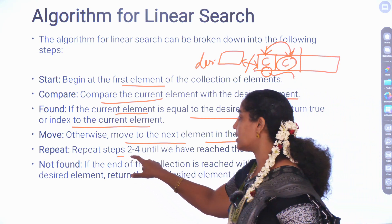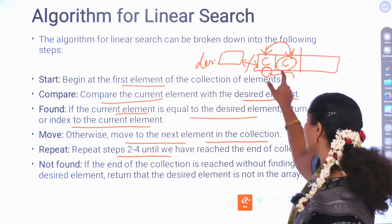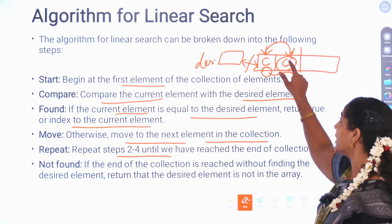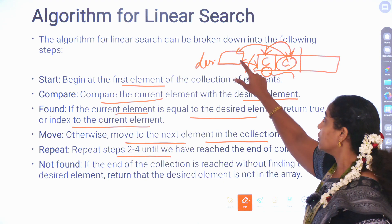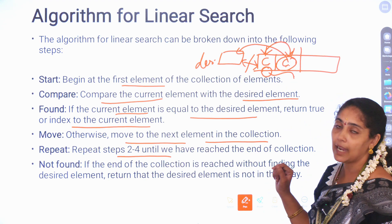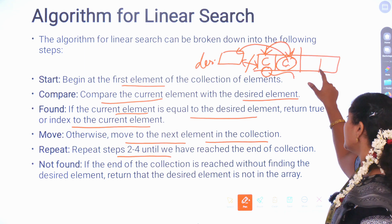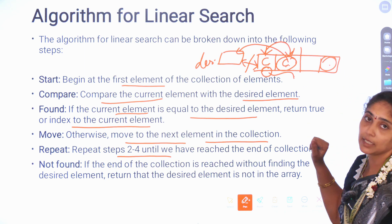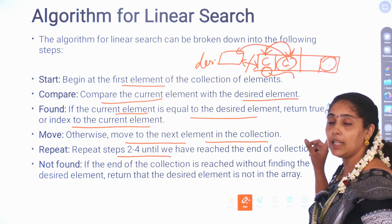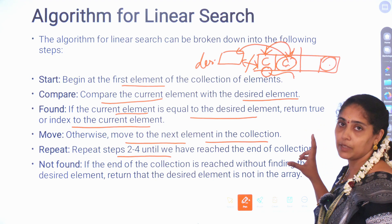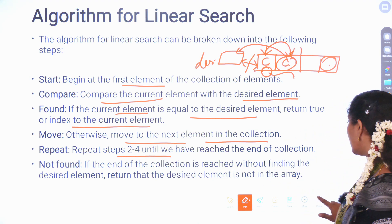We repeat steps 2 to 4 — comparing the current element with the desired element — until we find our desired element. If we reach the final element in the list and still have not found the element, it means the element is not found in the list.